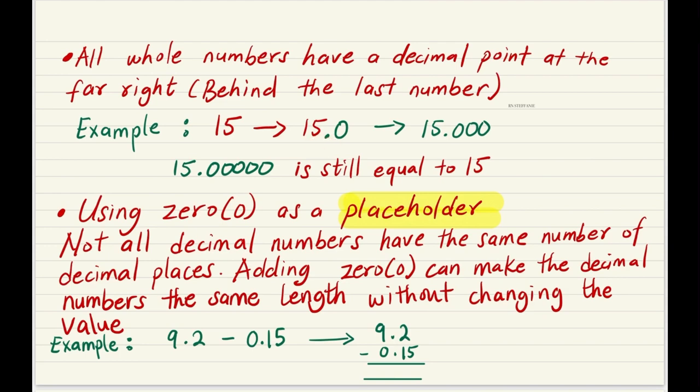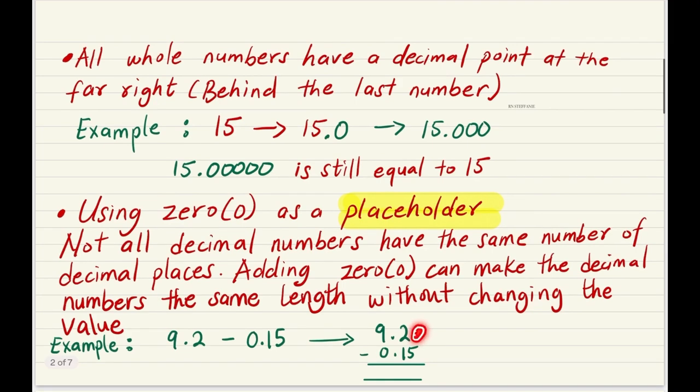Use zero as a placeholder. Not all decimal numbers have the same number of decimal places, and therefore adding a zero can make the decimal numbers the same length without changing the value. For example, when we have 9.2 minus 0.15, I'm going to show you how placeholders come into use. For 9.2 minus 0.15, we can place a zero here so that both numbers have the same length.